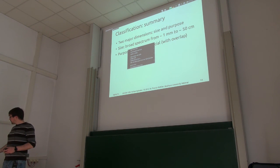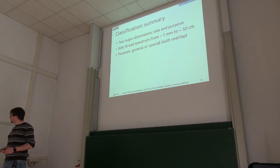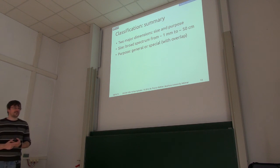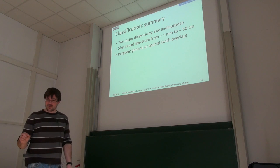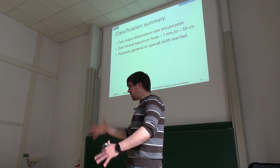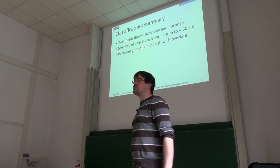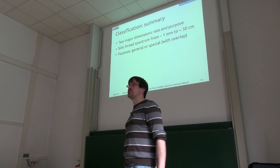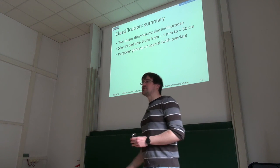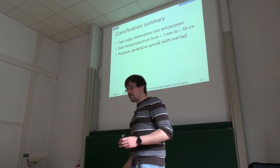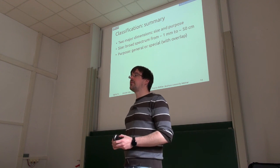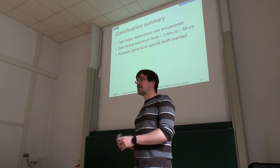To summarize: we've classified everything according to two dimensions — size and purpose. For size, we have a very broad spectrum from mobile devices as small as one millimeter up to maybe half a meter for a large laptop, which is probably the upper limit of what you'd call mobile. In terms of purpose, we have general and special purpose devices. Are there any other questions or comments up to this point?